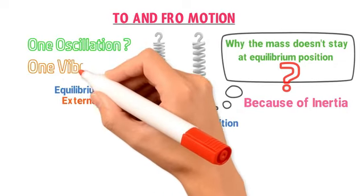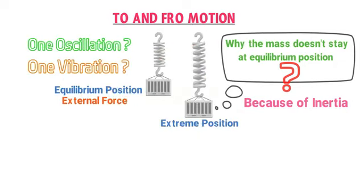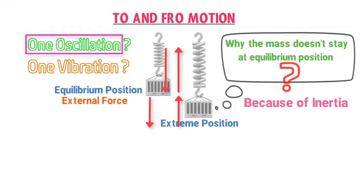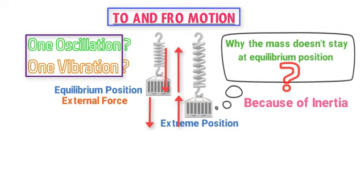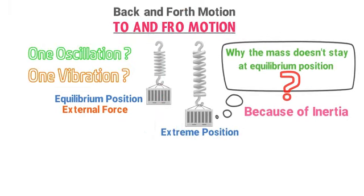One oscillation or one vibration consists of: the mass going from equilibrium position to extreme position, then from extreme position back to mean position, then from mean position to the other extreme position, and back to equilibrium position. This whole cycle is known as one oscillation or one vibration, and this whole motion is called to and fro motion — also known as back and forth motion — which always repeats itself over time.